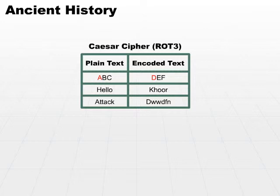So A would become D, B becomes E, and C becomes F. So your plaintext is ABC, your encoded text would be DEF. Then we can look at regular words, and it all works the same way. Hello becomes K-H-O-O-R, and attack becomes D-W-W-D-F-N.